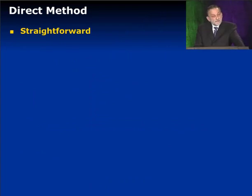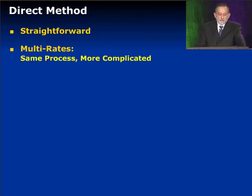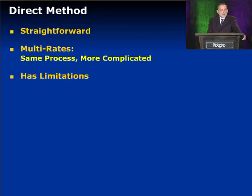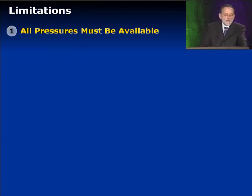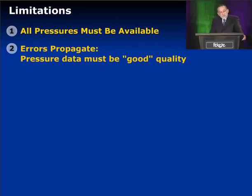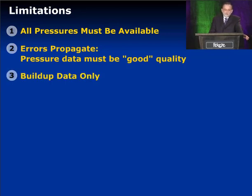What I've just described is fairly straightforward. For multi-rates, the process is the same but can get more complicated. This procedure is very direct — given data, I can work backwards and get the answer. But there are some serious limitations. The first limitation is that we must have all the pressure data available to us. Any time there are errors, it's going to make things really bad because they propagate. Because we don't tolerate errors very well, generally we'll only be able to use buildup data for this, because drawdown data is often very noisy.